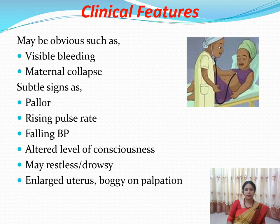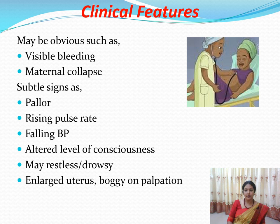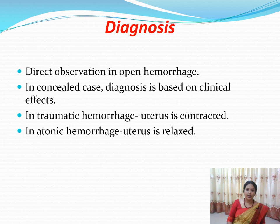The clinical features of primary and secondary postpartum hemorrhage are almost the same. Visible vaginal bleeding will be present, and signs of maternal collapse include pallor, rising pulse rate, falling blood pressure, altered level of consciousness, restlessness, and drowsiness. On palpating the uterus, it will be enlarged and boggy — it will not feel like a hard mass as expected in the postpartum period. Normally the uterus contracts effectively and feels hard like a cricket ball, but in PPH it does not contract, so it feels boggy.